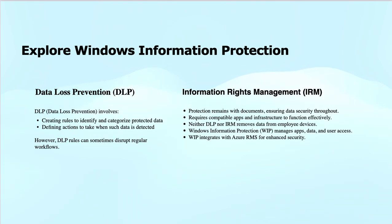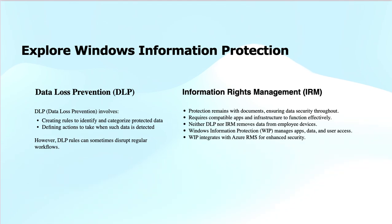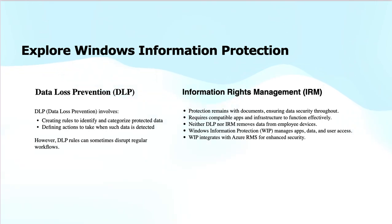Then we have action rules. Once the sensitive data is identified, DLP determines what to do — such as blocking access, alerting users, encrypting the data, or logging the activities. Workflow impact is also part of it. A strict DLP rule can interrupt normal workflows, causing delays or frustration, especially if legitimate data actions are mistakenly flagged as violations or false positives. In short, DLP aims to secure sensitive data while minimizing disruptions to daily tasks.